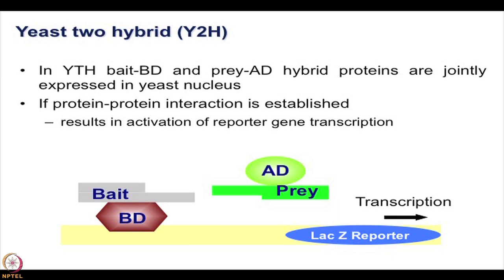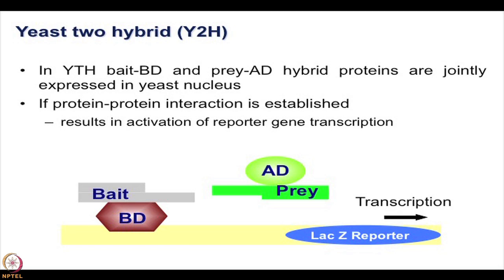The classical yeast two-hybrid approach has been in the field for a very long time and is still heavily used. When you have a bait and a prey — a binding domain and an activation domain — when they come together, transcription can happen. A major problem is that there are a lot of false positives from the screening. So when you identify hundreds of interactors using two-hybrid, you are not very sure how many of those are really relevant to take forward. This can be a good starting point but is not the most powerful way of doing protein-protein or biomolecular interaction studies. Therefore, newer approaches such as protein microarray based platforms have come forward.